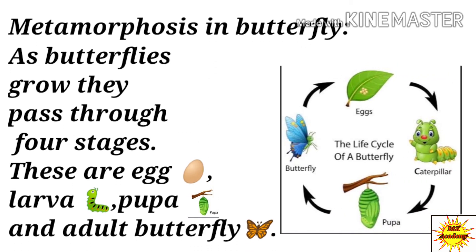Metamorphosis in butterfly: as a butterfly grows, it passes through four stages. These are egg, larva, pupa, and adult butterfly.